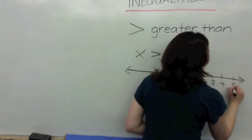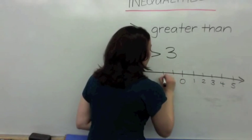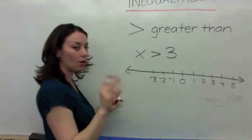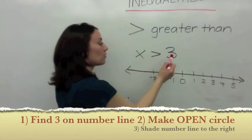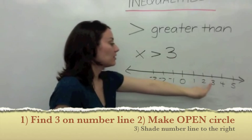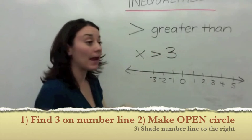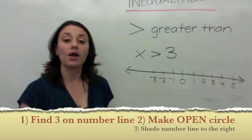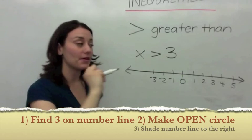4, 5. On the negative side we have negative 1, negative 2, negative 3. If X is greater than 3, find 3 on the number line. You need to draw an open circle around the number 3.